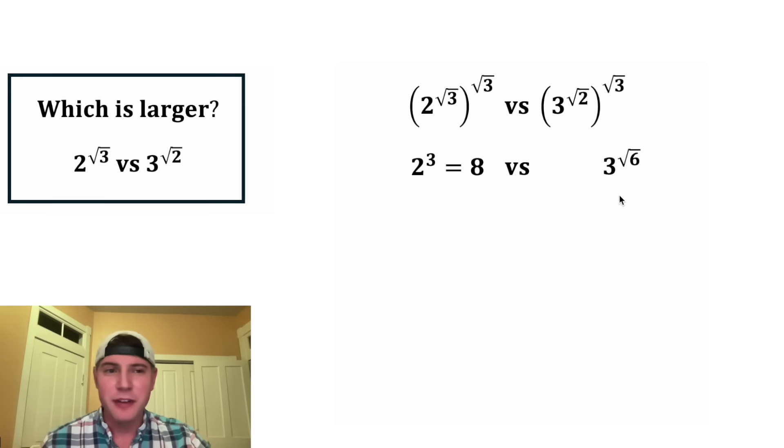I'm not sure how to evaluate this one, but I do know how to give it a range of values. No matter what, 3 to the square root of 6 has to be greater than 3 to the square root of 4, because square root of 6 is greater than square root of 4. And no matter what, 3 to the square root of 6 has to be less than 3 to the square root of 9, because square root of 9 is greater than square root of 6.